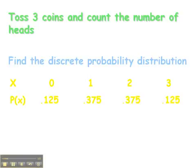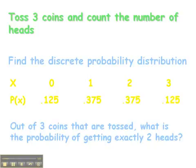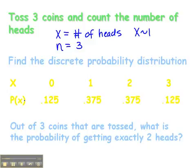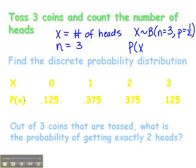Out of three coins tossed, what is the probability of getting exactly two heads? X is binomial with parameter N equals three and probability of success equals one-half. We want the probability that X equals two, which we can look up in our table. The probability that X equals two is three-eighths according to our probability distribution.